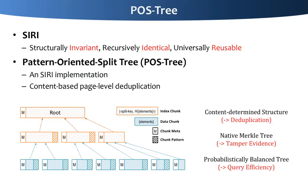In 4Base, we have implemented a SEUI index called the pattern-oriented split tree, or POST tree. The POST tree can perform very effective and efficient content-based page-level deduplication. At the underlying layer, the POST tree is a probabilistic balanced tree and supports very efficient queries. Data are chunked based on content and are not necessarily balanced. The POST tree also implements a native Merkle tree to provide tamper evidence, and as mentioned, the POST tree is a content-determined structure, which supports very effective deduplication.